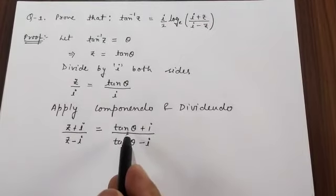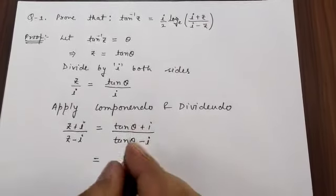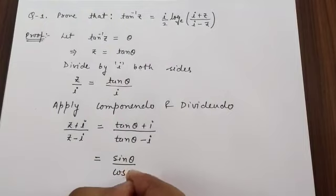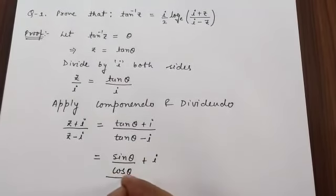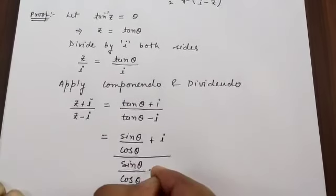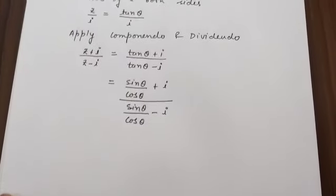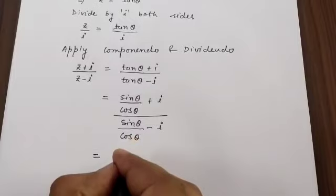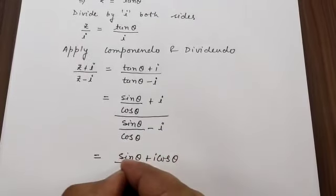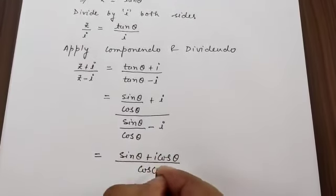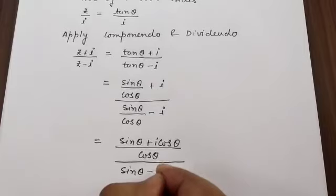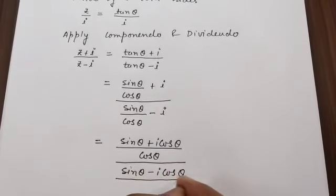Now we cannot simplify further directly, so let us break tan θ into sin and cos. So tan θ = sin θ / cos θ. Substituting: (sin θ/cos θ + i) / (sin θ/cos θ - i), which gives (sin θ + i·cos θ) / cos θ over (sin θ - i·cos θ) / cos θ.